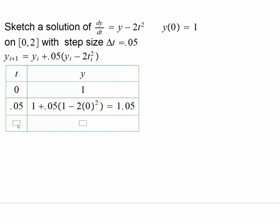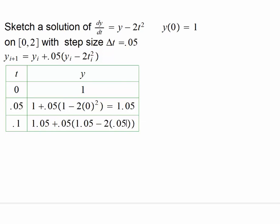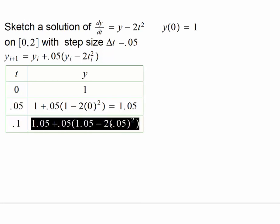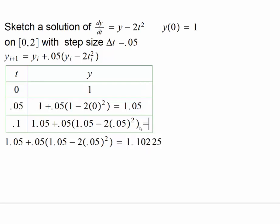The next point is 0.05 plus 0.05 = 0.1. Now I take the previous y value and multiply by the step size. This time I write 1.05 — the y value from the very previous step — minus 2 times the x value 0.05 squared. So we substitute that and this turns out to be 1.10225. We proceed in this manner.